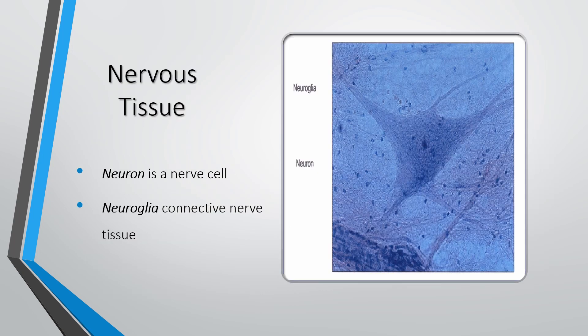A nerve cell is called a neuron, and nerve tissue is called neuroglia. Neuroglia is a connective nerve tissue made up of billions of neurons. Nerves run in one direction, and neurons transmit messages — electrical signals and impulses — travelling through the neuron from one end to the other.